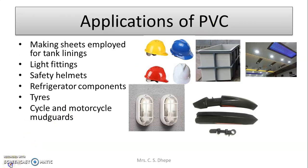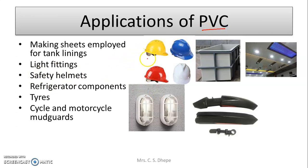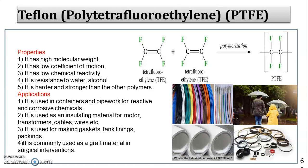Applications of PVC: it is used for making sheets for tank lining — the inside lining of water tanks is made from PVC. It is used for light fittings, safety helmets at construction sites, and refrigeration components. Note for MCQ: safety helmets are prepared from polyvinyl chloride. It is also used for tires, cycle and motor mudguards. These are the main applications of PVC — we covered its formation, properties, and applications.